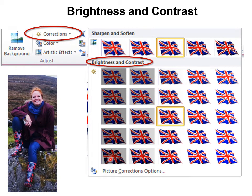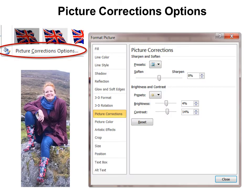When really what I want to do is have more contrast. So I usually go right to the picture corrections options down at the bottom. And with that, you can actually choose the brightness and the contrast level, which gives a much better quality picture.